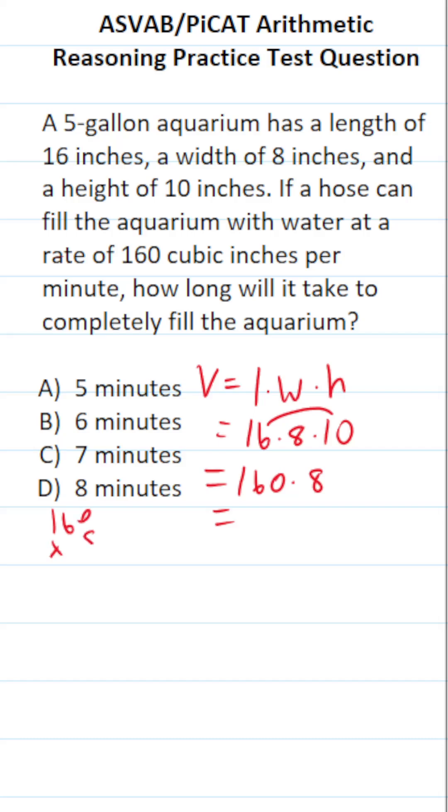We have 160 times 8. 0 times 8 is 0. 6 times 8 is going to be 48, so carry a 4. 1 times 8 is 8, 9, 10, 11, 12. So the volume of this 5-gallon aquarium is 1,280 cubic inches.